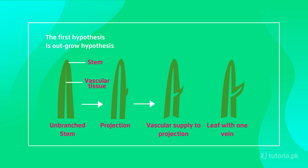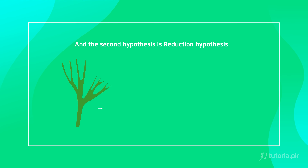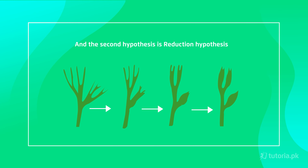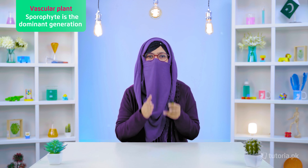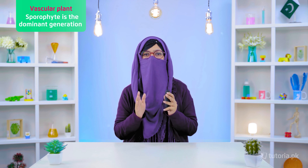This was about seedless vascular plants. Now, in non-vascular plants, the gametophyte is dominant — if you see a non-vascular plant, you are actually seeing its gametophytic generation. But in vascular plants, this is the opposite: the sporophyte is dominant over the gametophyte. So if you look at a vascular plant, you are seeing its sporophytic generation.